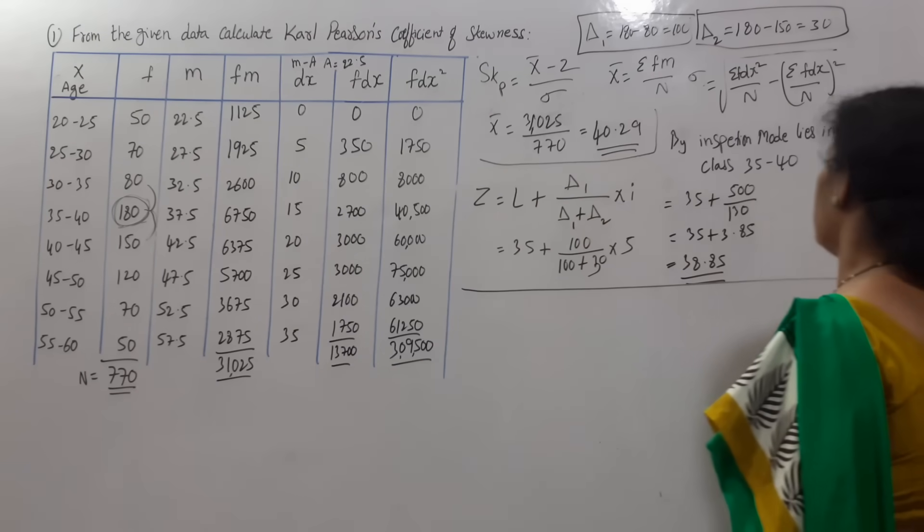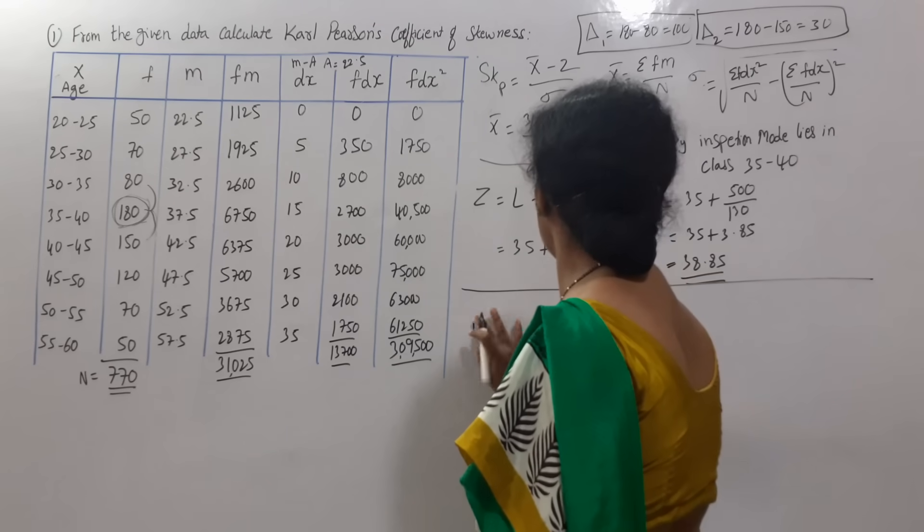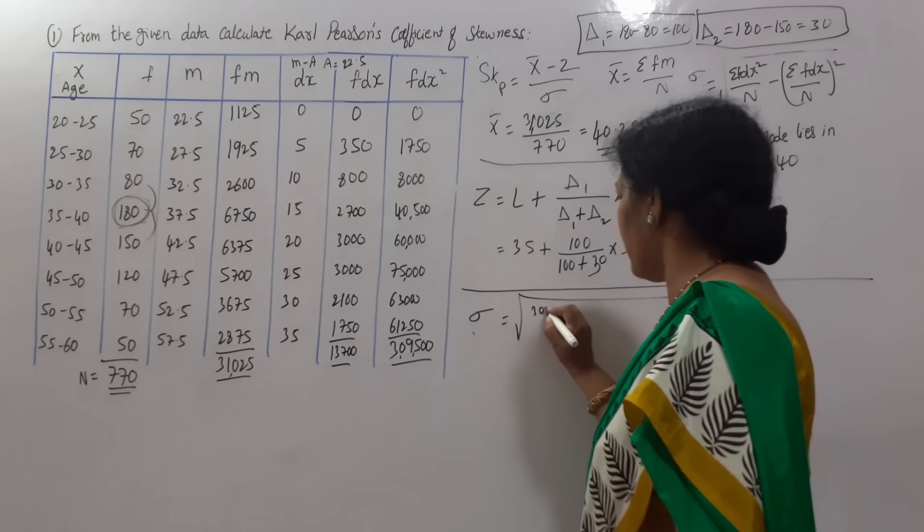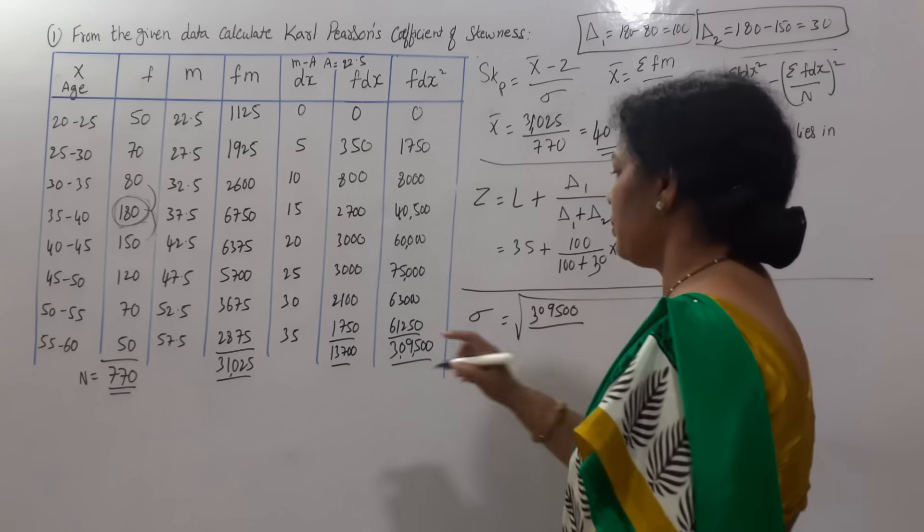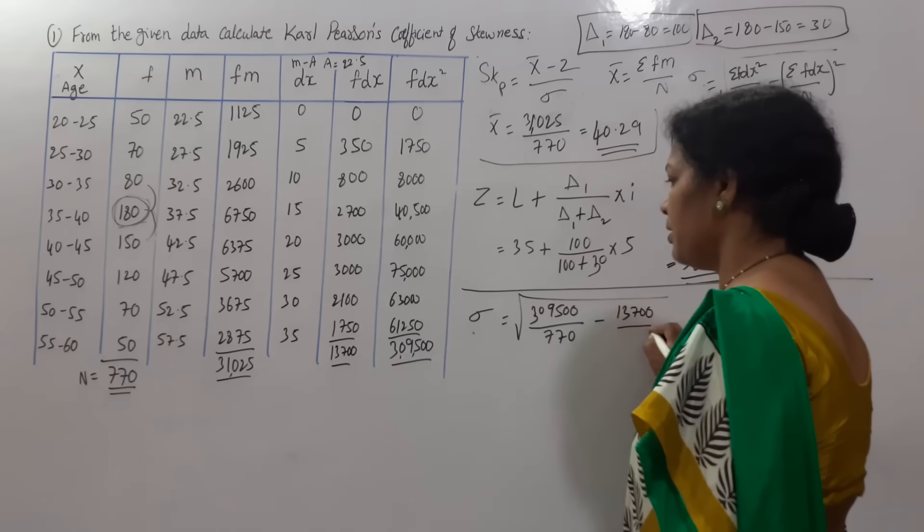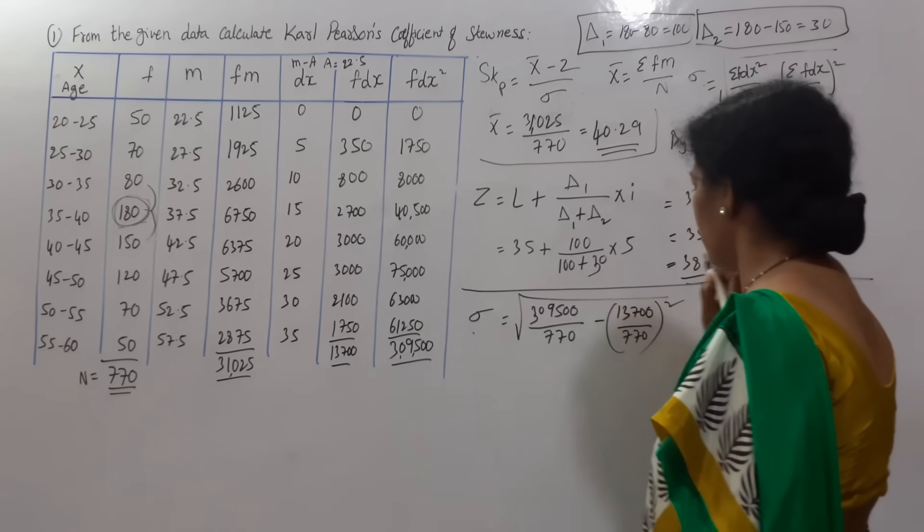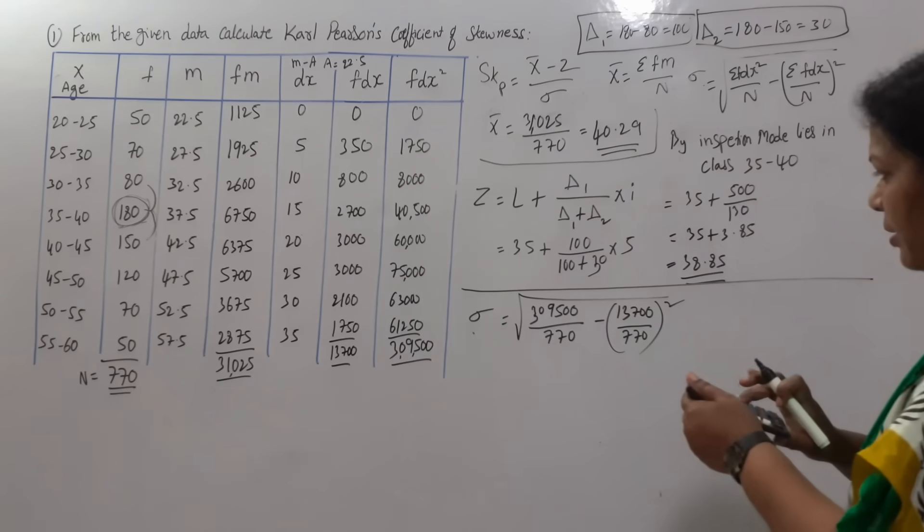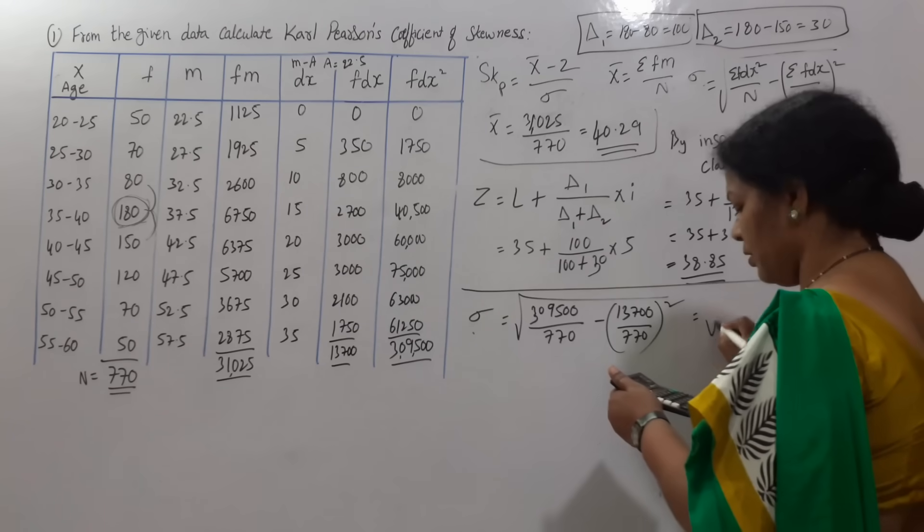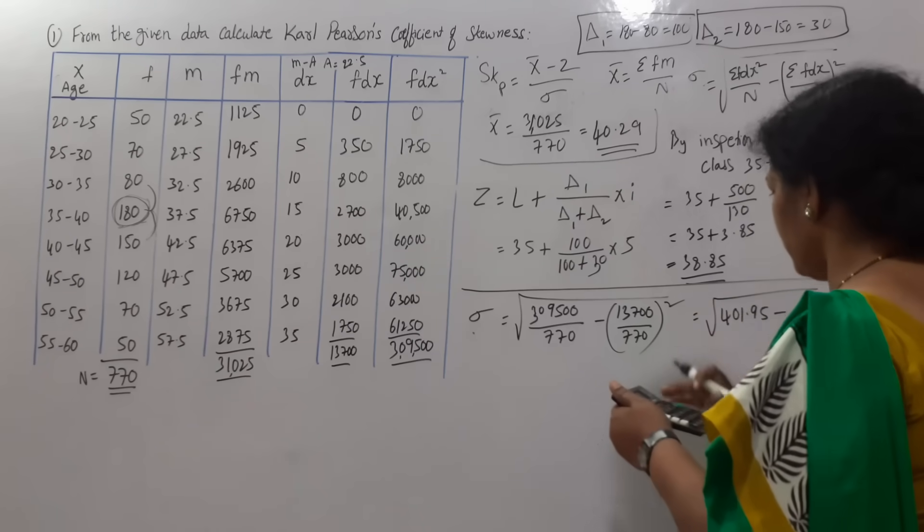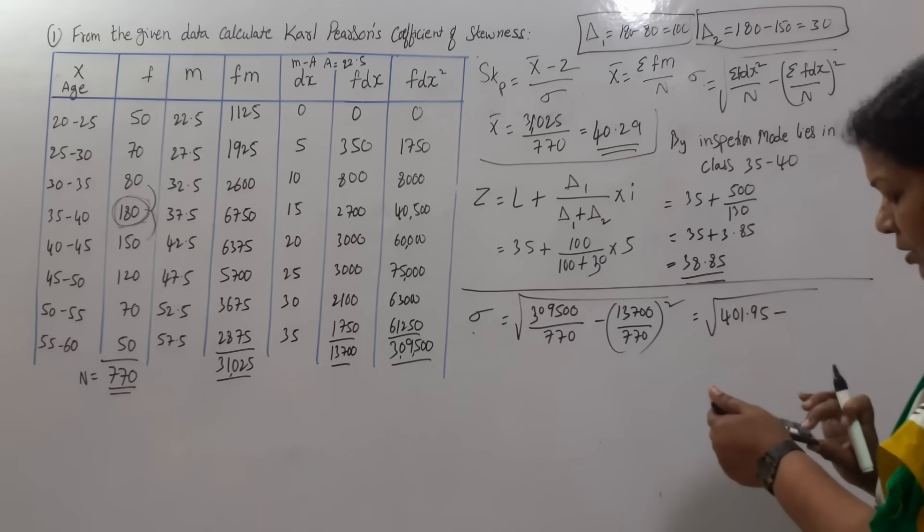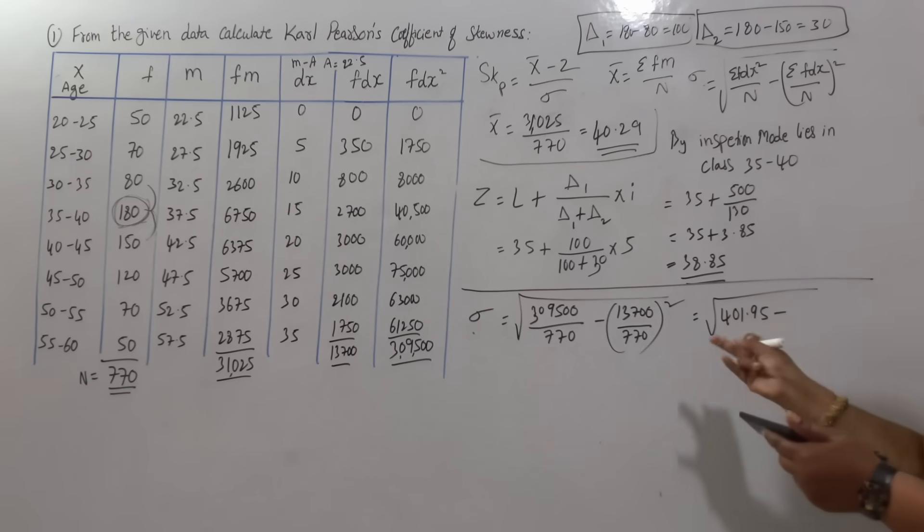Standard deviation, we will work out it. Rho is equal to, as per the formula, root of sigma FDX square by N minus FDX by N whole square. Sigma FDX square is 3,95,500 divided by N 770 minus FDX 13,700 by 770 whole square. We will simplify this. 3,95,500 divided by 770 comes to 401.95 minus 13,700 divided by 770 comes to 17.79.